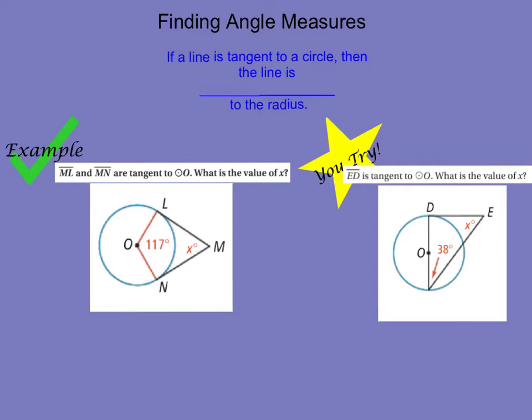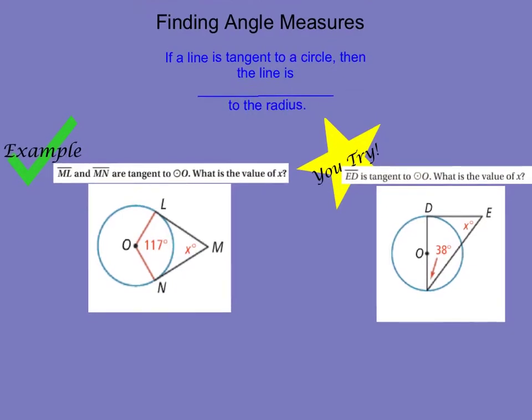So one property that we know about tangents is if a line is tangent to a circle, then that line is perpendicular to the radius. So if I look at this first picture here, I have that ML and MN are tangent to circle O. So these are two tangent lines. What is the value of x? Well, because these are tangent lines, by what we just learned, we know that these must be 90 degree angles. Because my tangents are perpendicular to the radius of a circle.